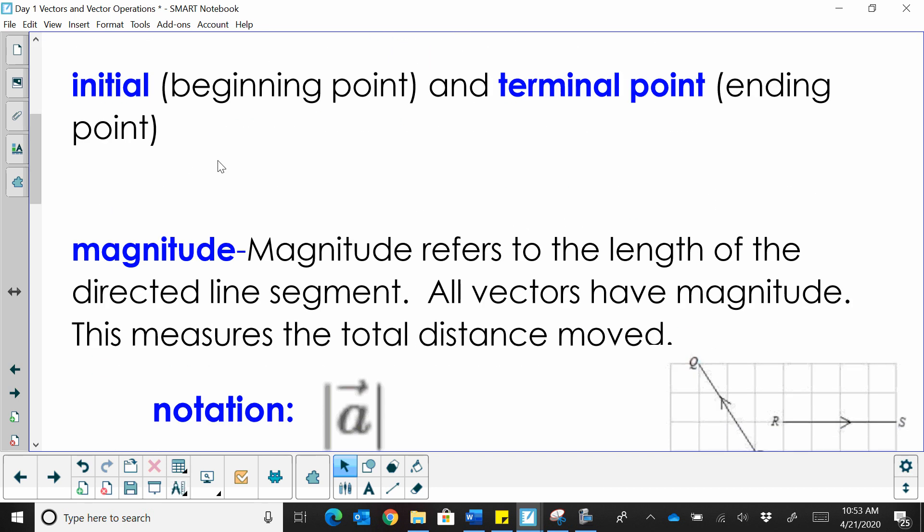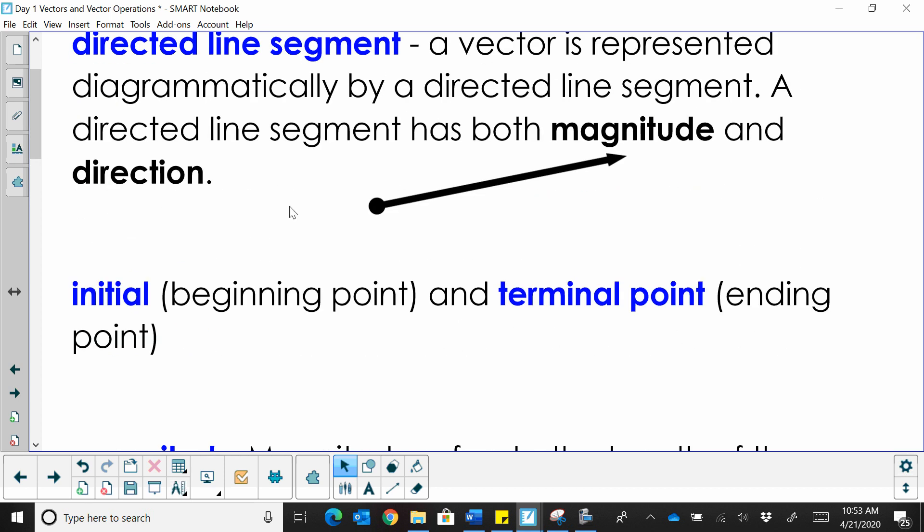It has to have a starting point, a beginning point. We call that the initial point. And then it has a terminal point, which is the ending point. So if we're looking at this directed line segment, this position right here is the initial point. And this position down here is the terminal point.